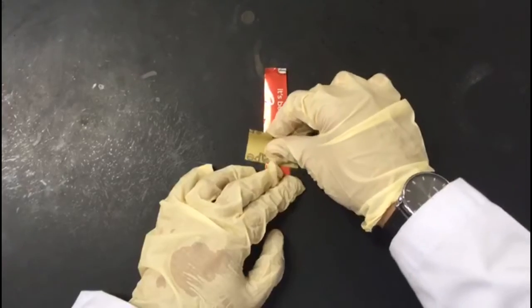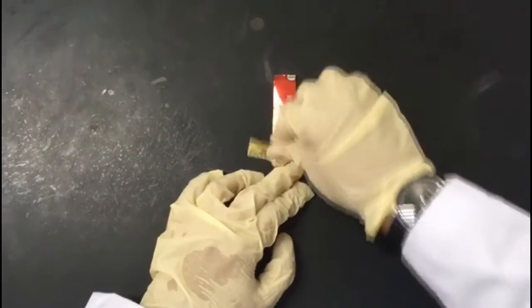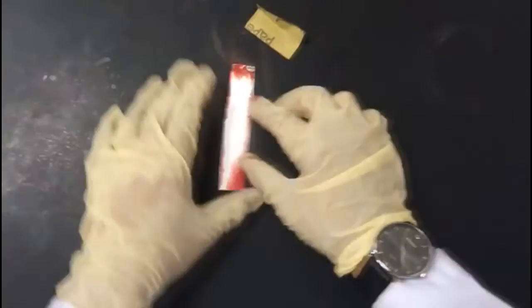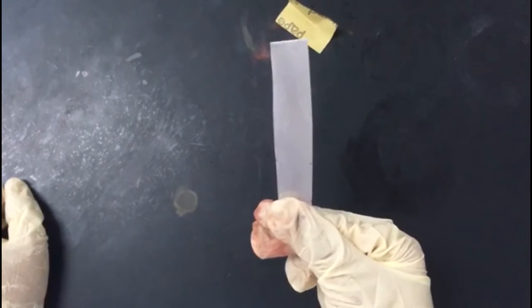Third, sand off the coating on both sides of the strip that had been cut earlier by using sandpaper so that the coating on both sides of the aluminum strip that contain oxide won't be interrupted with the reaction.